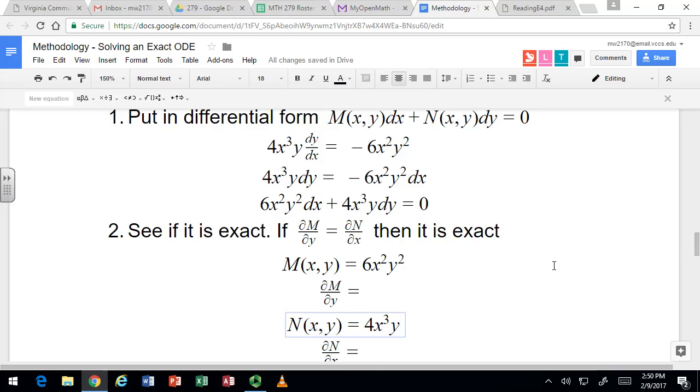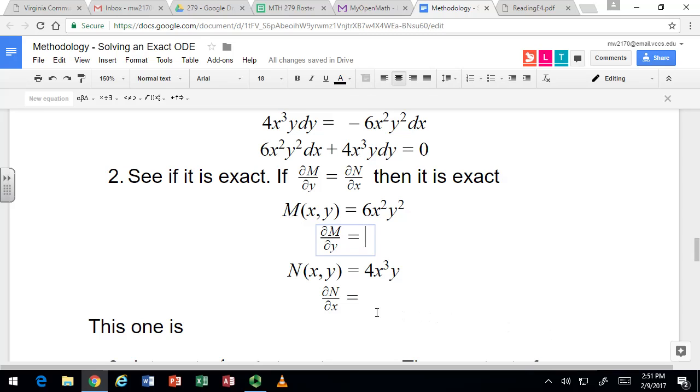To make sure this whole process works, you can do a check that the second mixed partial derivatives of that function are equal. Just check that the partial derivative with respect to y of M and the partial derivative with respect to x of N are in fact the same. Taking the derivative of 6x squared y squared, treating x as a constant, we would get 12x squared y. Taking the derivative of N and treating y as a constant, we would get 12x squared y. They're the same. So if these match up then it is exact, and that means you can proceed with the process.